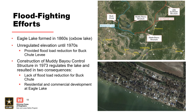After construction of the control structure, the elevation of Eagle Lake became regulated with a dedicated water control plan that keeps the elevation relatively constant. This resulted in two consequences: first, the lack of elevation rise in the lake prevents inundation of the Buck Chute land side toe, increasing the differential head experienced by the levee during flood events. Second, since flooding of the lake is no longer a regular occurrence, residential and commercial development centered around recreation has occurred along the lake shoreline.